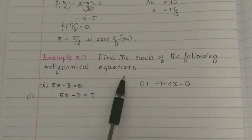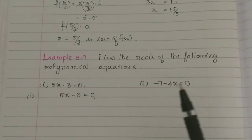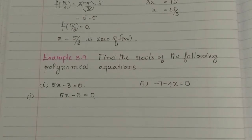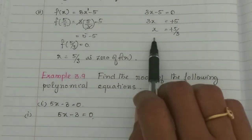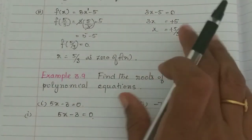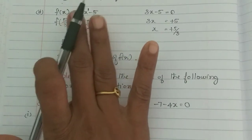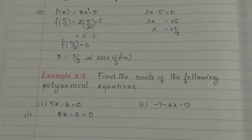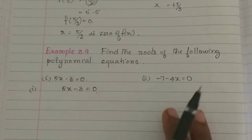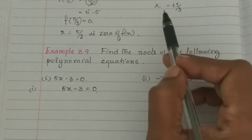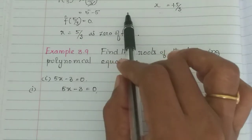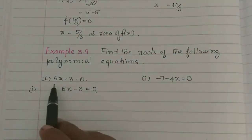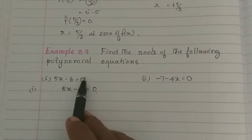Next, example 3.9: Find the roots of the following polynomial equation. Here we find the zeros of the polynomial. There is a linear equation, so we set it equal to 0, find the x value, and substitute it in the polynomial. The x values are the roots. You can say 5x minus 3 is equal to 0.